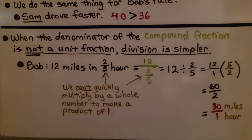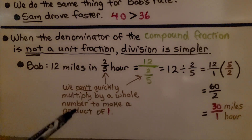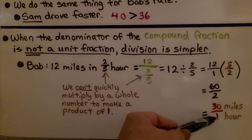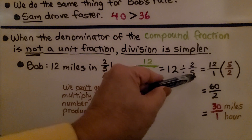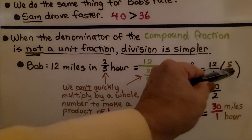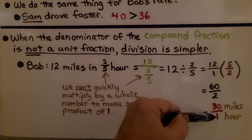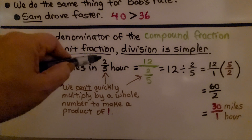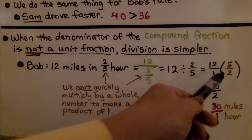When the denominator of the compound fraction is not a unit fraction, division is simpler. If it said Bob drove 12 miles in 2/5 hour, we can't quickly multiply 2/5 by a whole number to get a product of 1. So we do 12 divided by 2/5, writing it as 12/1 multiplied by the reciprocal of 2/5. It's a lot easier to just use division and multiply by the reciprocal in this case.